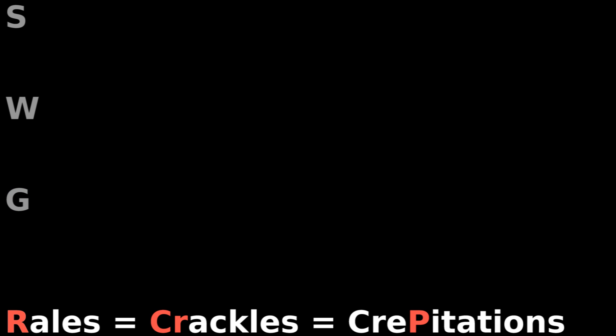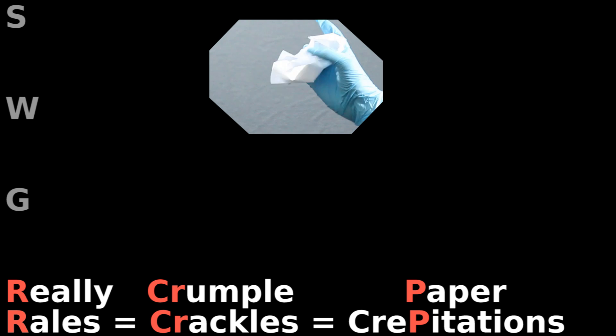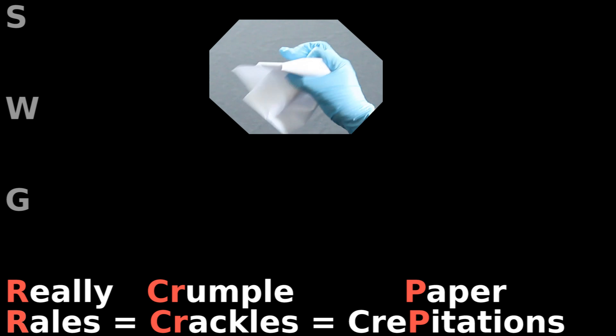Rails, crackles, or crepitation — you really crumple paper. This sounds like paper getting crumpled. You hear brief staccato crackling noises.